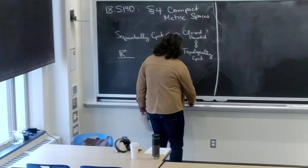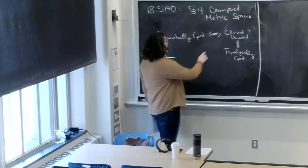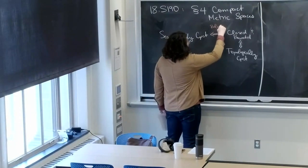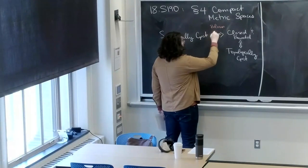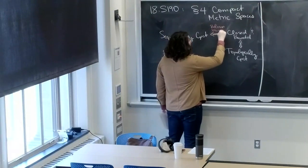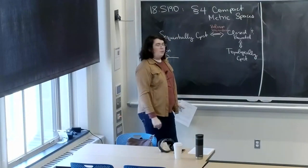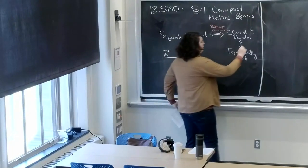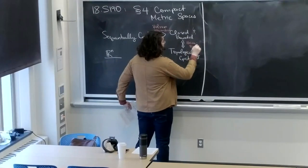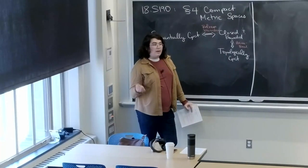In these two theorems, we used some very important propositions from real analysis. To prove that closed and bounded implied sequentially compact, we had to use the Bolzano-Weierstrass theorem, which essentially states exactly the condition of sequential compactness. And to use closed and bounded to show topologically compact, we had to use the Heine-Borel theorem, where we trapped our compact set inside of a closed cube, and we know that closed cube is going to be compact.